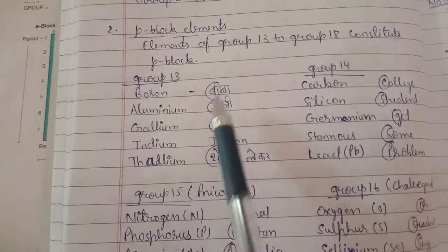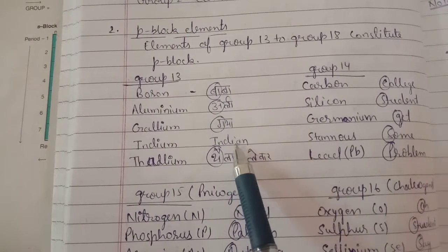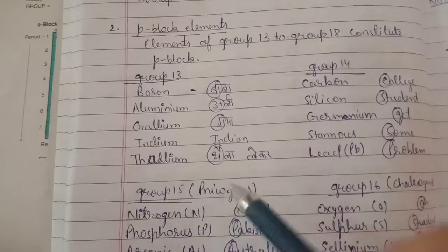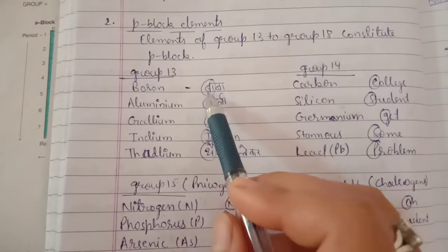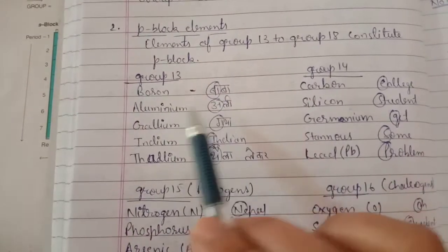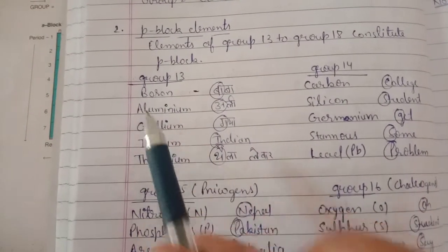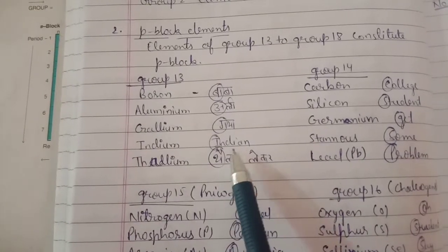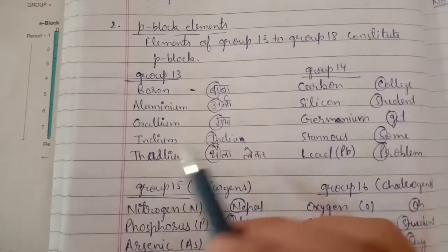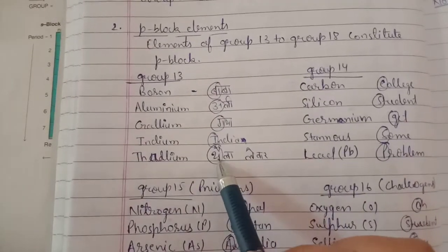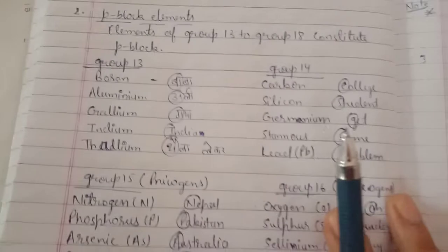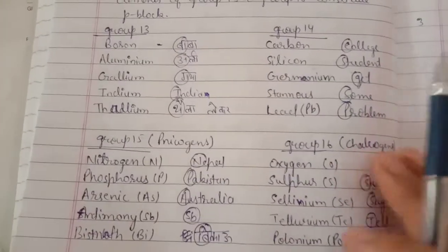Group 13 is the boron group. I've written a mnemonic: 'Baba Ali Gaya India Thayla.' The circled words give you hints - B for boron, A for aluminium, G for gallium, In for indium, and Th for thallium. You can create your own short notations to memorize things.